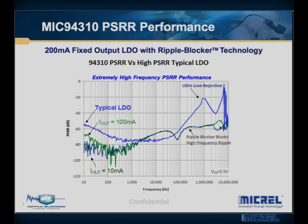Micrell's RippleBlocker family of products has combined RippleBlocker technology with the best PSRR performance of any LDO in the market today, to provide up to 80 dB of PSRR at lower frequencies and up to 60 dB of noise attenuation to 5 MHz. Clearly a solution that is very unique and that provides ripple voltage suppression like no other product in the market today.